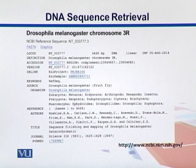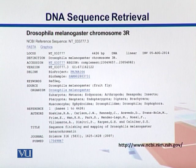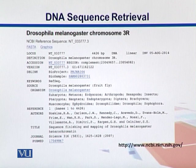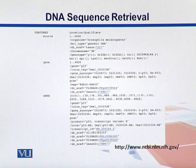We also have the variant, which says 033777.3. There should have been versions .1 and .2, and since this is the third review, we see .3 in the name. Down below we also see the references and authors from which this gene is coming, along with their publication — it was published in Science. Scrolling down, we see the features of this gene. The total length of the gene is 4426.